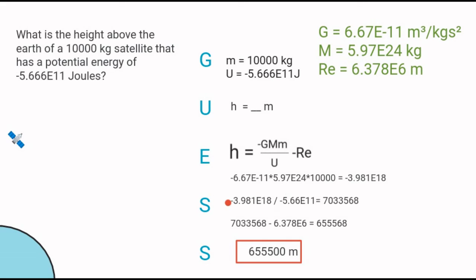Then we take that and divide it by the potential energy. A negative number divided by a negative number gives this very large number. Then we subtract the radius of the Earth from it and get 655,500 meters.